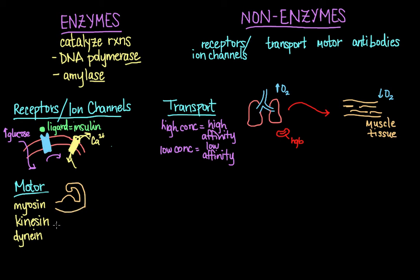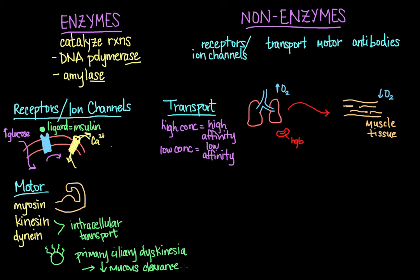Now, kinesin and dynein are motor proteins that are responsible for intracellular transport. And then dynein, in particular, also plays a role in the motility of cilia, which are these little extensions of a cell that project out. And mutations in a particular dynein protein can lead to a rare disease called primary ciliary dyskinesia. So in primary ciliary dyskinesia, you can see there's some sort of dyskinesia or a problem in movement for the cilia. And mutations in a particular dynein protein lead to this rare disease in which the action of the cilia of the cells lining the respiratory tract fail to function. And this leads to a decrease in mucous clearance from the lungs and, therefore, an increased susceptibility to chronic infections like pneumonia and bronchitis. So as you can see, these motor proteins are really important.